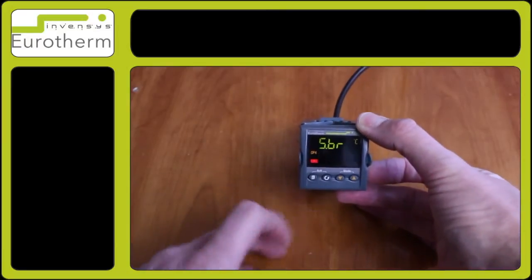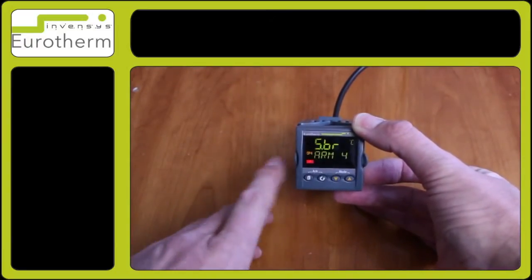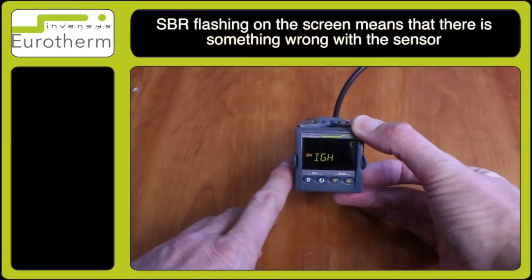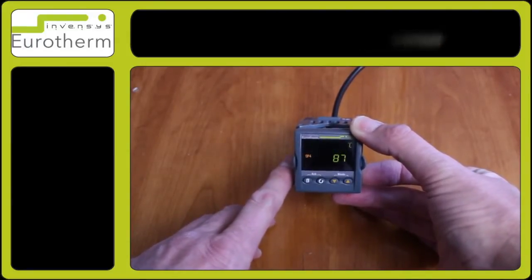In this particular instance you can see on the front panel SBR is illuminating. This is showing that something is wrong with the sensor. Perhaps it is broken.